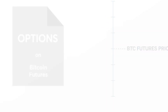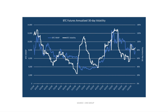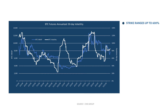Due to the volatility of Bitcoin futures, the strike range for options on Bitcoin futures can range below 1,000 points to as high as 600% of the Bitcoin futures settlement price. This range allows traders to hedge their risk or express an opinion on potentially large movements in Bitcoin at a lower cost than the at-the-money strikes.